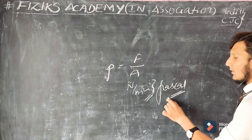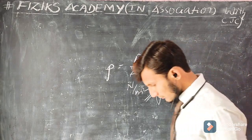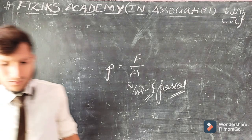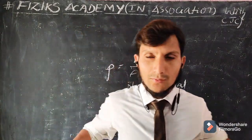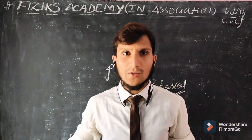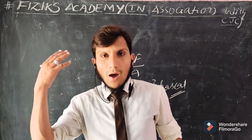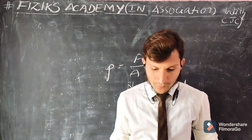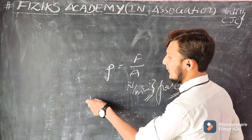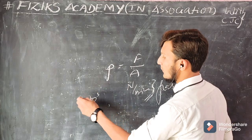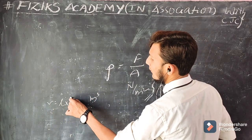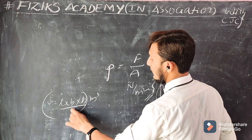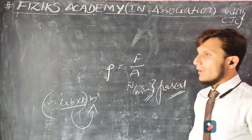Newton per meter square is also called Pascal. Volume is the space occupied by an object. Its unit is meter cube, since the formula for volume is length into breadth into height, giving us a cubic unit.